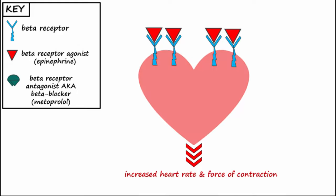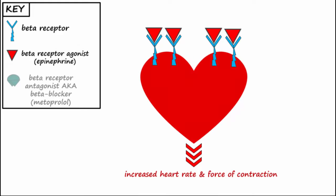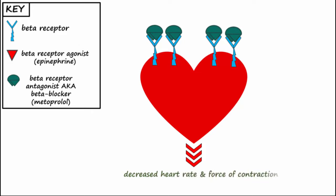The beta blocker or beta receptor antagonist metoprolol, on the other hand, will bind to the receptor and block the effect, decreasing heart rate and force of contraction. For this reason, beta blockers may be used to lower high blood pressure.